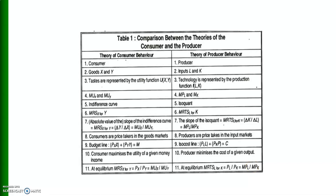There are many similarities between the theory of consumer behavior and the theory of producer behavior, but one major difference is that the consumer always moves in the north-east direction by maximizing satisfaction, whereas the producer does not. Because the producer's aim is not to maximize output but to maximize profit, the producer stops at the level of output where profit is maximum. This is an important distinction that many students miss.